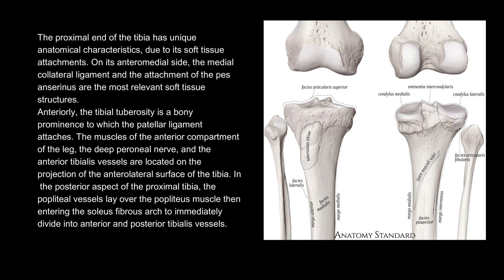The muscles of the anterior compartment of the leg, the deep peroneal nerve, and the anterior tibialis vessels are located on the projection of the anterolateral surface of the tibia. In the posterior aspect of the proximal tibia, the popliteal vessels lay over the popliteus muscle, then entering the soleus fibrous arch to immediately divide into anterior and posterior tibialis vessels.